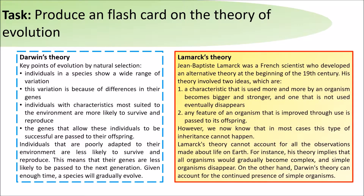Lamarck's theory is slightly different to this. Jean-Baptiste Lamarck was a French scientist who developed an alternative theory at the beginning of the 19th century. This theory involved two ideas.